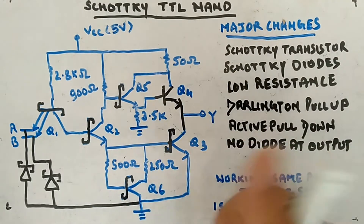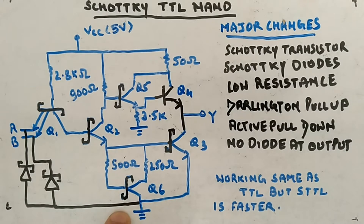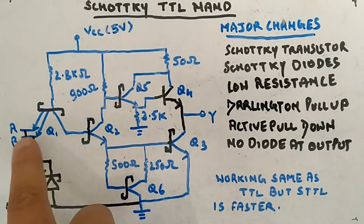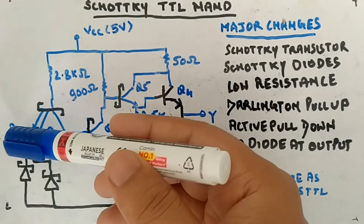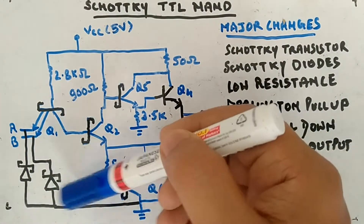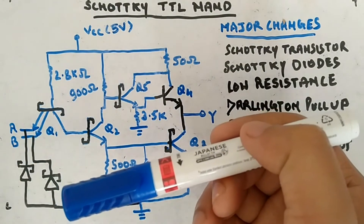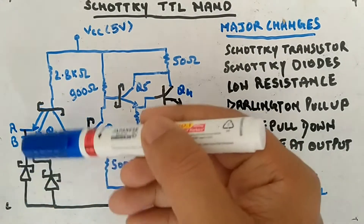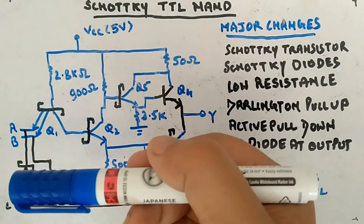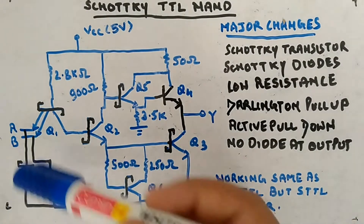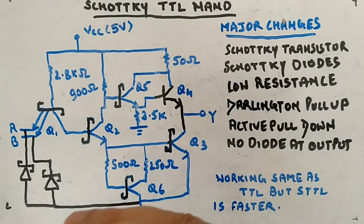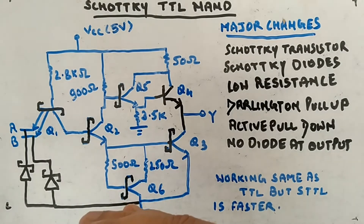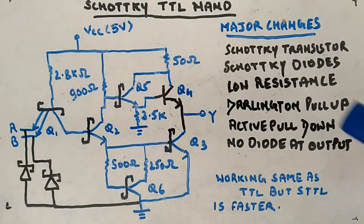Schottky diodes are used to save the circuit from spikes. The Schottky diode has its P-junction connected to zero (ground) and the N-junction connected to the inputs. If there is a negative spike in the input, these two diodes will start conducting because this point will be zero and the input will go less than zero, so they will start conducting and clamp the voltage. The cut-in voltage will be only 0.2–0.3 volts, so the input cannot go beyond minus 0.2 or minus 0.3 volts.